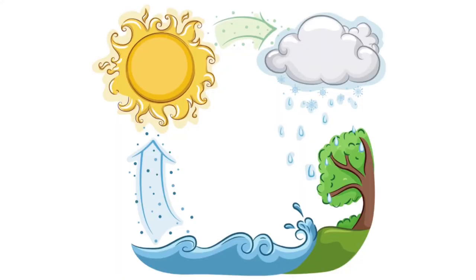The water cycle is the process that happens when water evaporates from the earth's surface, rises up into the air, and then falls back down to the ground again. There are four main stages in the water cycle.